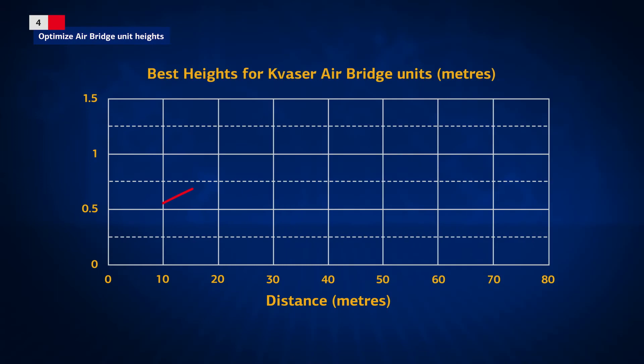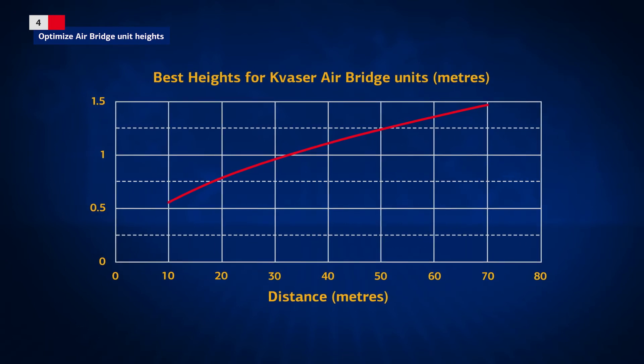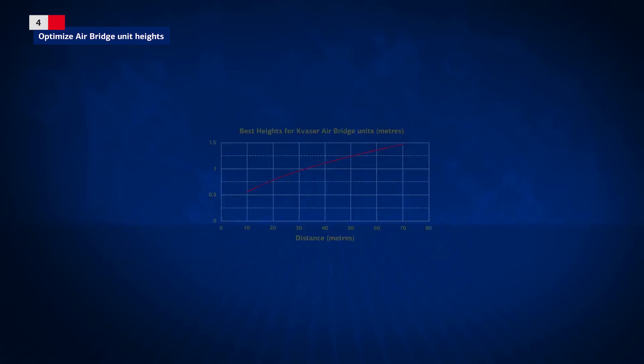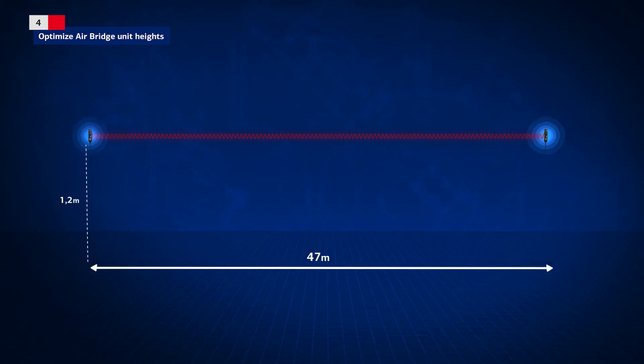In theory, and depending on the distance between units, an antenna height that accords with the red line in the graph would be worth experimenting with. The recommended heights can be applied for distances above 10 meters between AirBridge units, in order to obtain best performance in outdoor use.